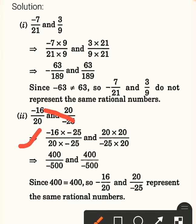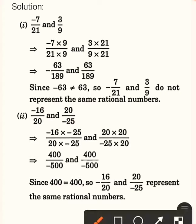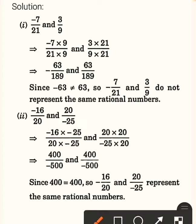So, cross multiplication: minus 16 into minus 25 on one side, and 20 into 20 on the other side. Be careful with the sign. The denominators — 20 and minus 25 — will be multiplied for both sides.